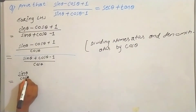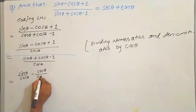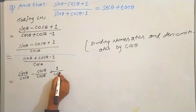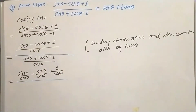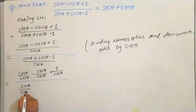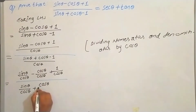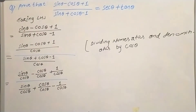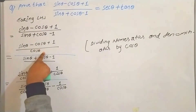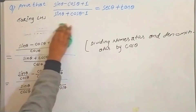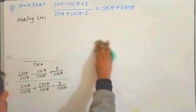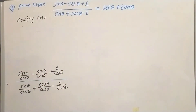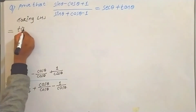After dividing by cos θ, we separate each component: sin θ upon cos θ, plus cos θ upon cos θ, minus cos θ upon cos θ, plus 1 upon cos θ. Dividing numerator and denominator with cos θ — separate each term.